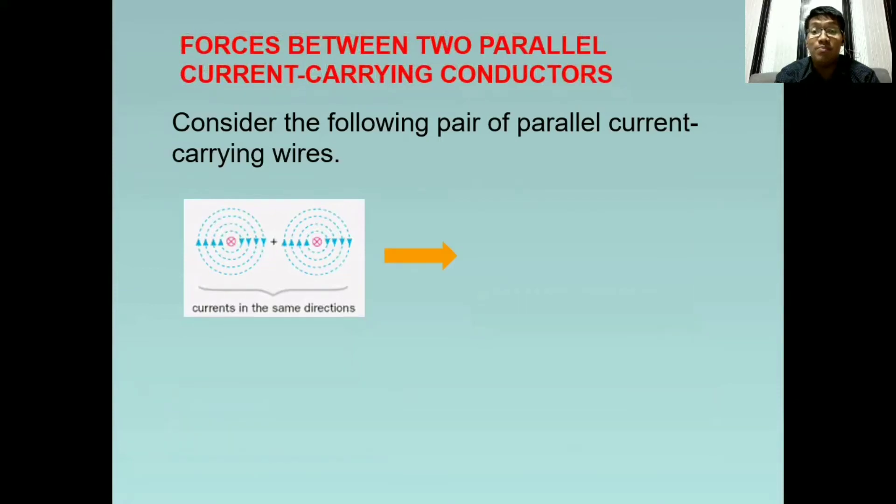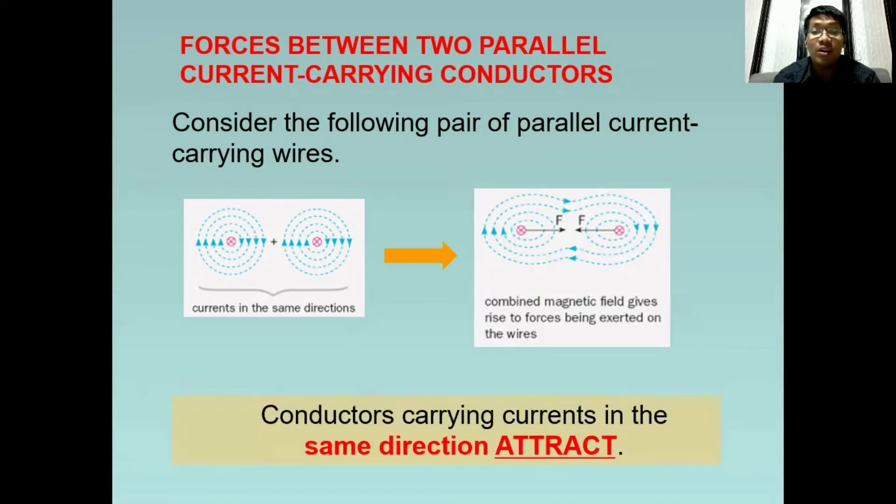So the result will be like this: the conductors carrying currents in the same direction will attract each other, so they will move towards each other.